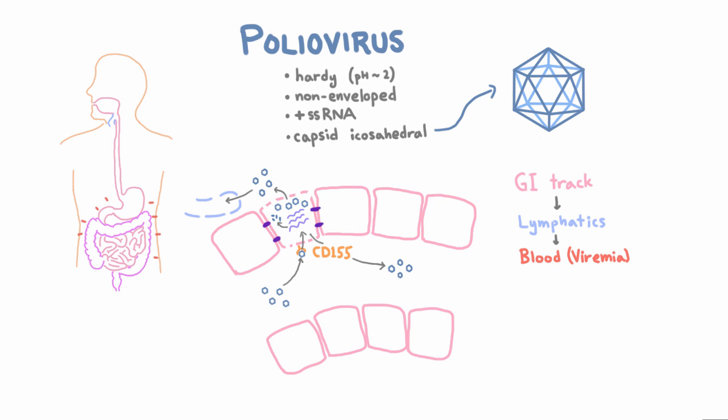We still haven't mentioned anything about paralysis, but now we're finally there. Once the virus is in the blood, it goes all over the body and could theoretically infect anything. In some very unlucky people — one in one or two hundred — it gets through the blood-brain barrier and into the central nervous system, and starts infecting neurons. It doesn't infect just any neurons; because poliovirus mostly causes paralysis and not dementia or sensory loss, we can reason that it preferentially targets motor neurons. And indeed, it mostly replicates in the lower motor neurons and infects their cell bodies.